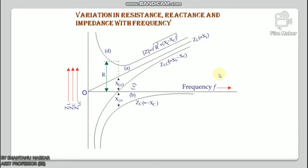In a series RLC circuit, three types of impedance are involved. First, electrical resistance — independent of frequency, remains constant. Second, inductive reactance XL = 2πfL — varies directly with frequency, so the graph of XL vs. frequency is a straight line through the origin. Third, capacitive reactance XC = 1/(2πfC) — varies inversely with frequency. The net reactance is XL − XC. The curve for −XC is drawn first, then the net reactance curve (XL − XC), and finally the total impedance curve is obtained by adding the constant resistance value to the net reactance.